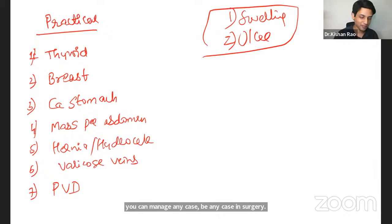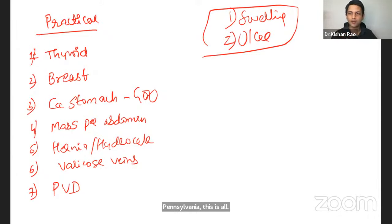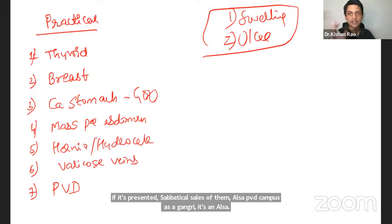If you know these two case performers, you can manage any case, be it any case in surgery. For example, these are the seven major cases. That's thyroid, breast, carcinoma stomach, presenting as a gastric outlet obstruction and mass per abdomen. Like a pseudocyst of pancreas or mass or hernia or hydrocele, varicose veins or peripheral vascular disease. All these are the most commonly kept or maybe parotid, whatever oral cavity, malignancy. These are the commonly kept exam cases. Whatever may be the case. What is thyroid? What is thyroid? It's nothing but a swelling. Breast lump, swelling. Carcinoma stomach, again, the swelling. Mass per abdomen, swelling. Hernia is a swelling. Hydrocele is a swelling.